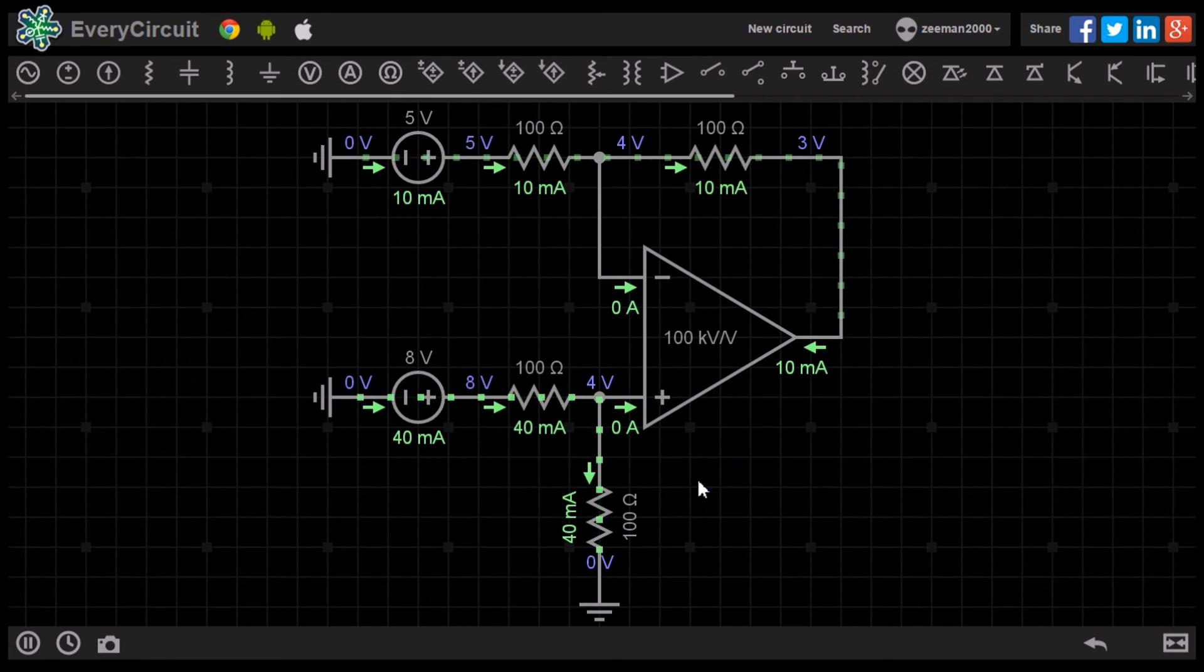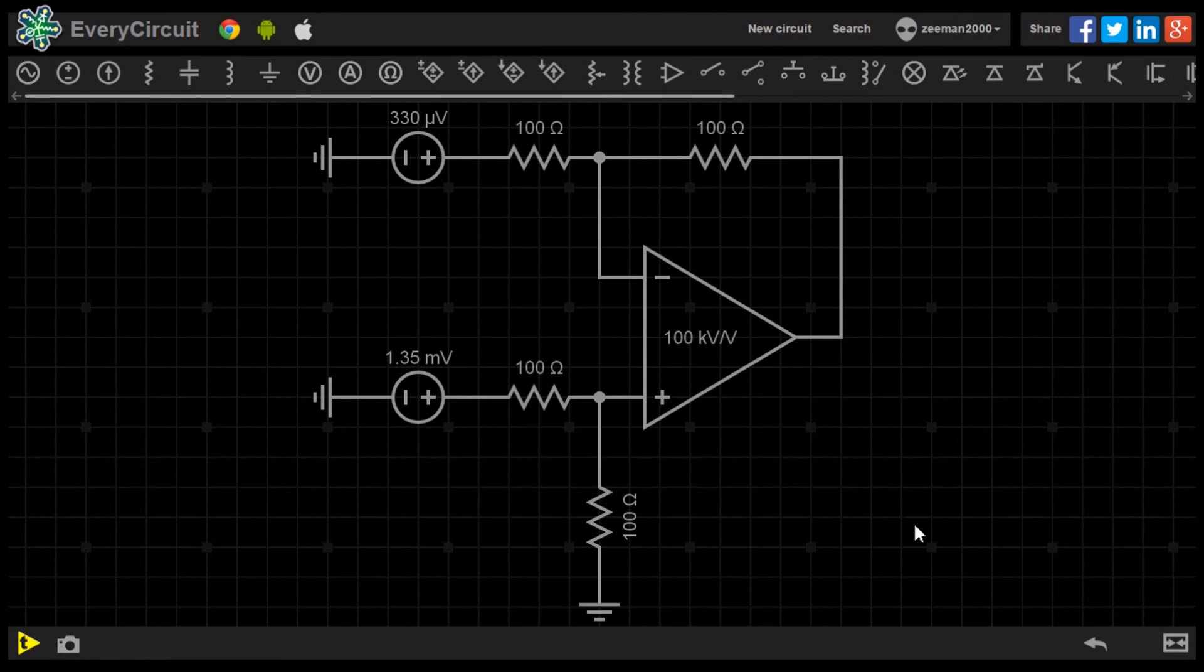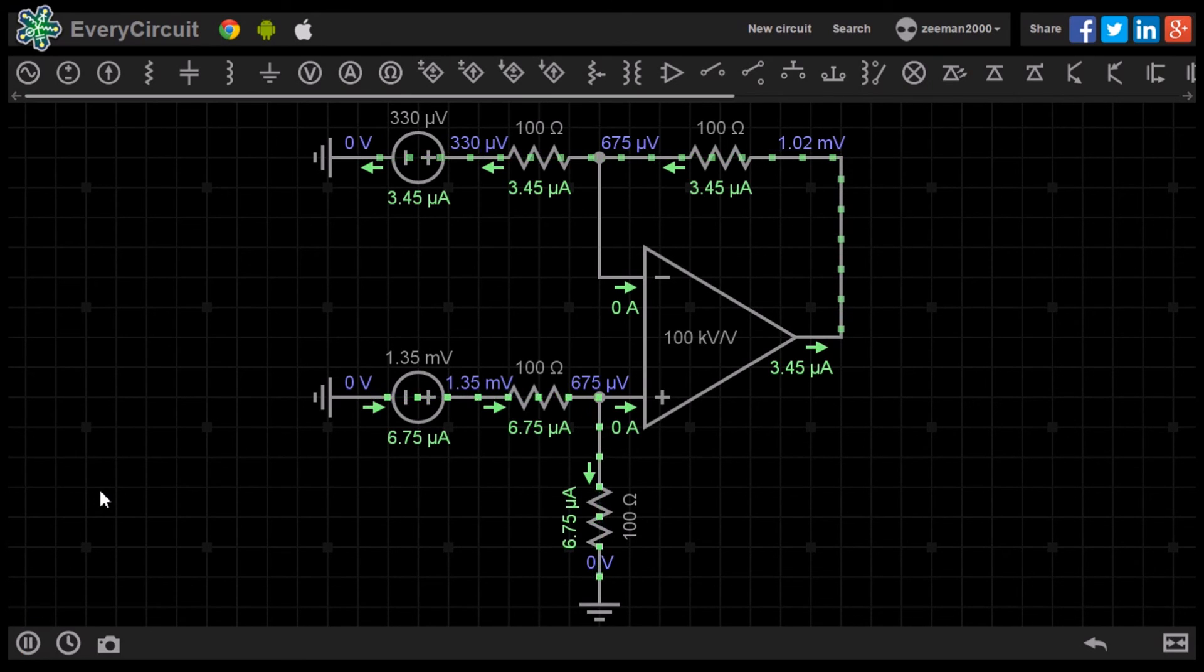You may think that the voltages we have used are very simple to calculate anyway, but where numbers start to get complicated is when we work in very small numbers. If we now set V1 to 330 microvolts and V2 to 1.35 millivolts, the circuit can output the difference much quicker than we would trying to work out the answer.